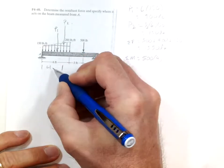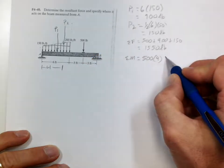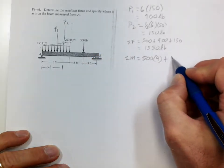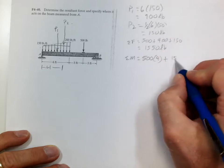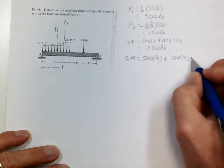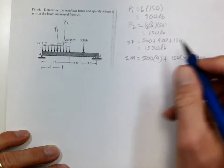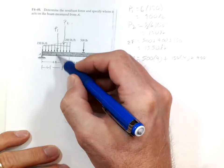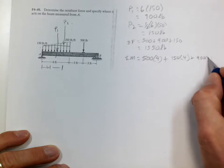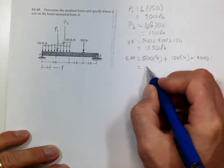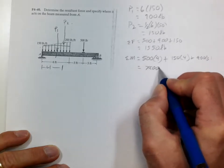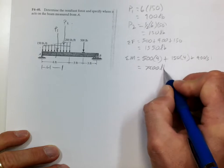plus 150 times 4, plus 900 times 3. So that's dead center. And the sum of the moments equal 7,800 pound-feet.